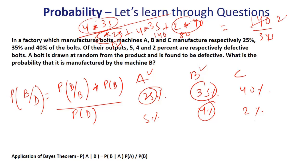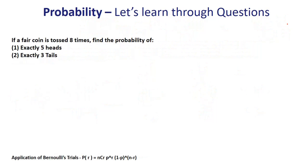So the answer is 140/345, which simplifies to 28/69. That's the answer for this question. Again, a very beautiful application of Bayes' theorem. Let's move forward and see the next question.